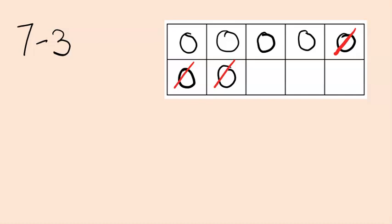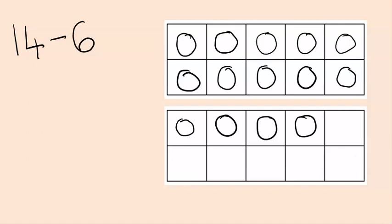We do the same thing with numbers to 20 as well. Although when we do this, say we're doing 14 take away 6, so we have our 14 counters as 10 and 4 more, and children will begin to reason that we know that we can take away the 4, and have 10 left, and then we just need to take away 2 more from 10.